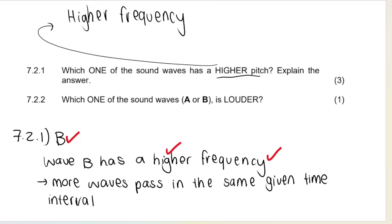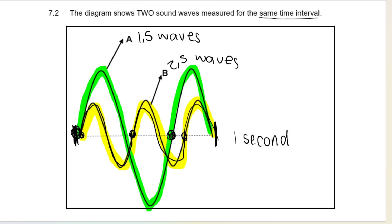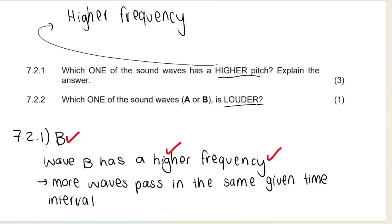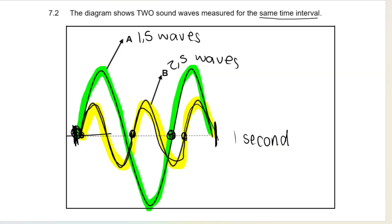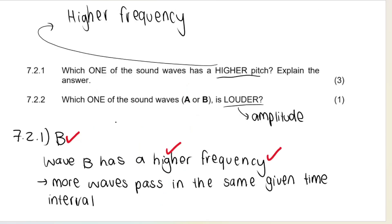Question 7.2.2 asks which sine wave is louder. Loudness corresponds to the amplitude of the wave. Amplitude is the maximum displacement from the rest or equilibrium position. Looking at the two waves, wave A has a bigger amplitude, which means it is the louder wave.